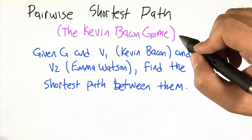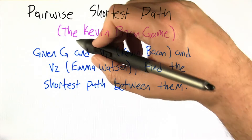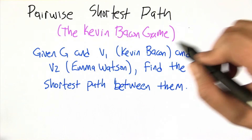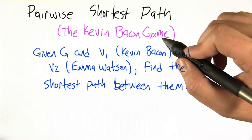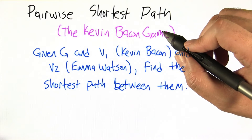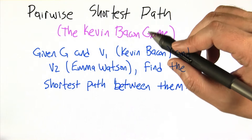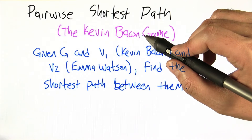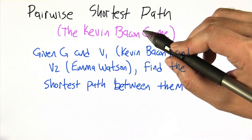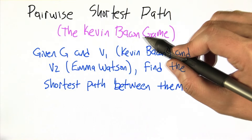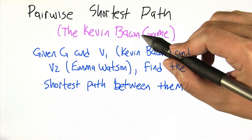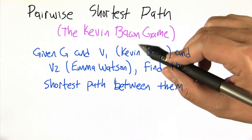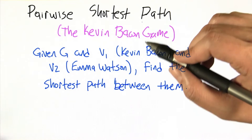Another kind of whimsical version of this problem is the Kevin Bacon game. Kevin Bacon is an actor who's been in a lot of movies, and for some strange reason he's been in lots of different movies with lots of different kinds of people. It turns out to be interesting — and not always very difficult — to connect Kevin Bacon to any actor you want.